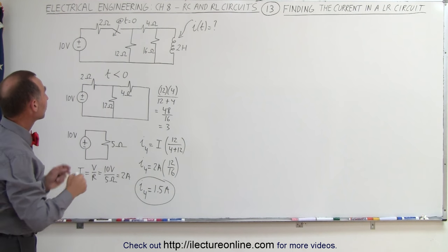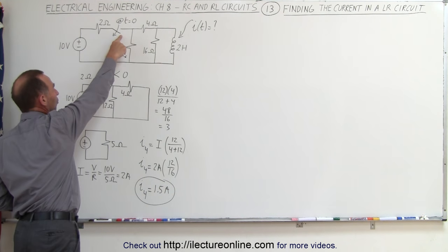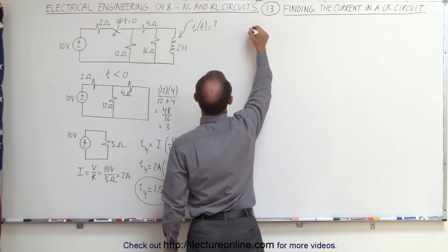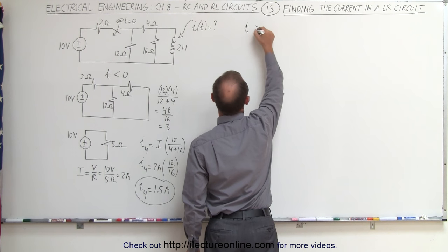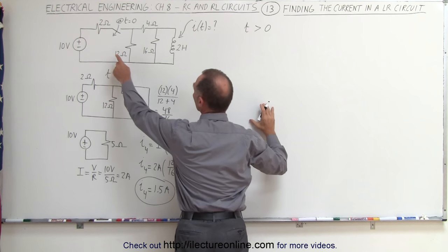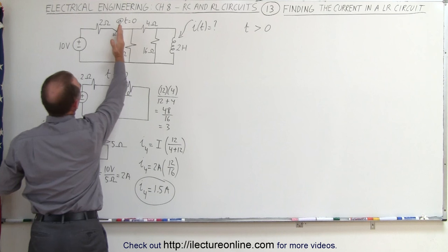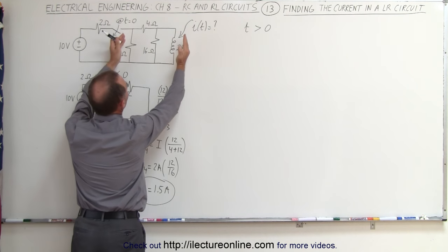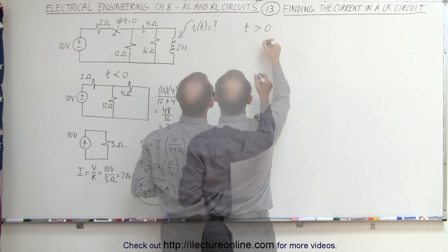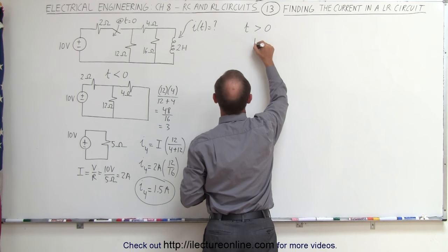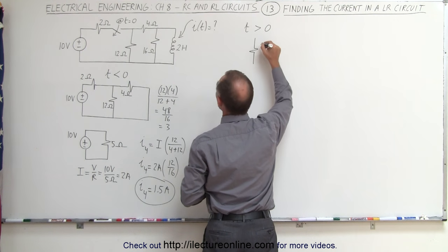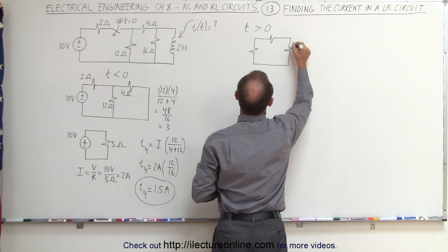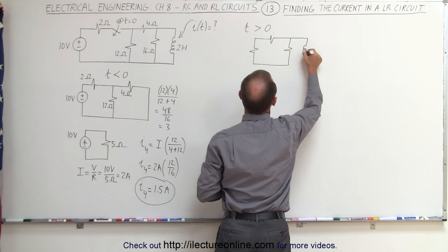Now we're going to open up the switch at time equals zero. So what happens when time is greater than zero? We're going to redraw the circuit. When the switch is open, this part of the circuit no longer plays a role because we don't have a continuous path. We only draw the remaining part of the circuit, which contains a 12 ohm resistor, a 4 ohm resistor, a 16 ohm resistor, and the inductor.